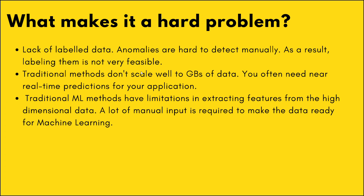What makes it a hard problem to solve? Firstly, lack of labeled data. For any machine learning model you need labeled data, and since anomalies are rare events, it is hard to get labels for those. Traditional methods don't scale well when data size increases into GBs and TBs, and you often need real-time predictions for your application.